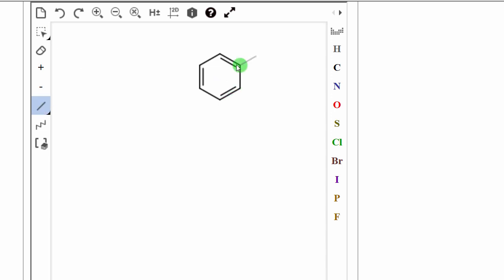If I wanted to make this a phenol, I would put a single bond here. Notice I have a methyl group that comes up. To change that to an OH, all I need to do is click the oxygen here on the right side and put that in. And I have an OH group.